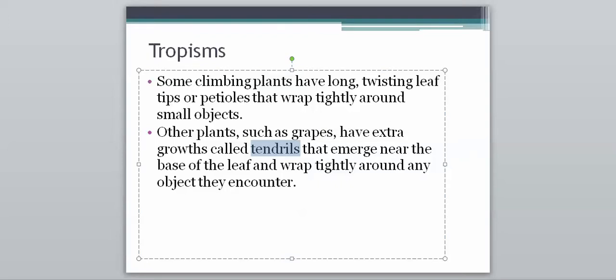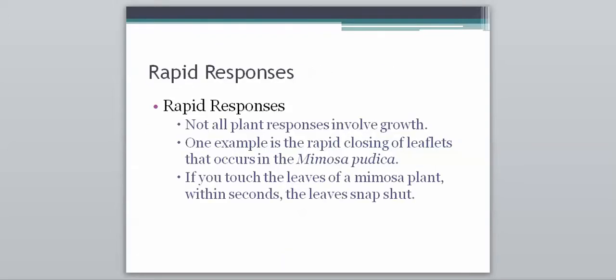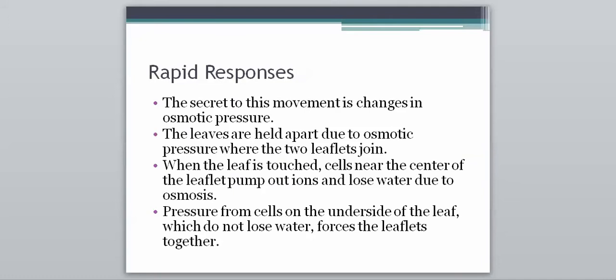So that's kind of it for thigmotropism. So now we're going to talk about how plants can respond to things. So rapid responses would be what these are called. So not all plant responses involve growth. We've mentioned gravitropism is growing against gravity, phototropism is growing with light, and thigmotropism is growing in response to touch. So one example of a rapid response that's not involved with growth is a plant called mimosa pudica. And we're going to take a look maybe at a video of this in class. And if you touch the leaves of this plant, within seconds the leaves snap shut. So if you're interested now, maybe type this into YouTube. And you can see it might also be called the touch-me-not plant. And it's pretty interesting that you literally touch it and it closes.